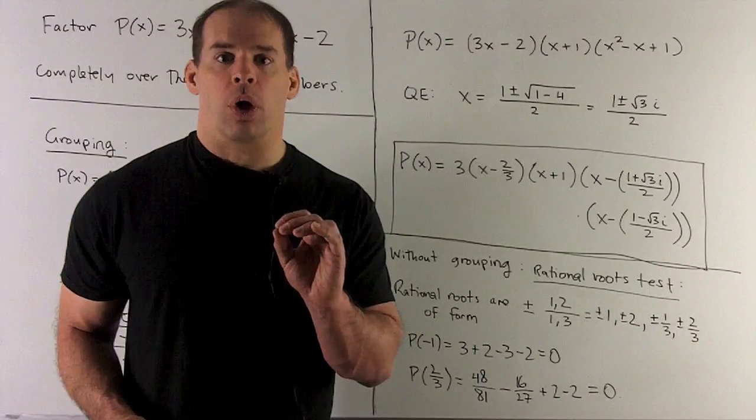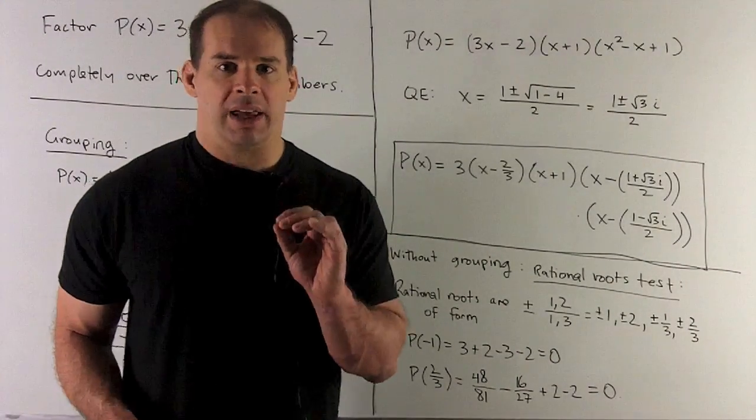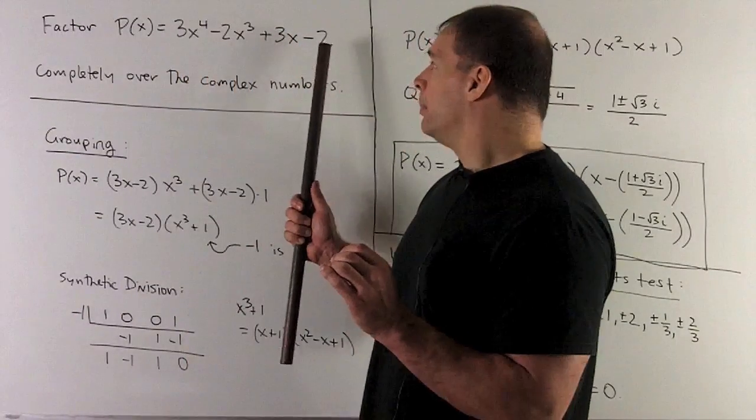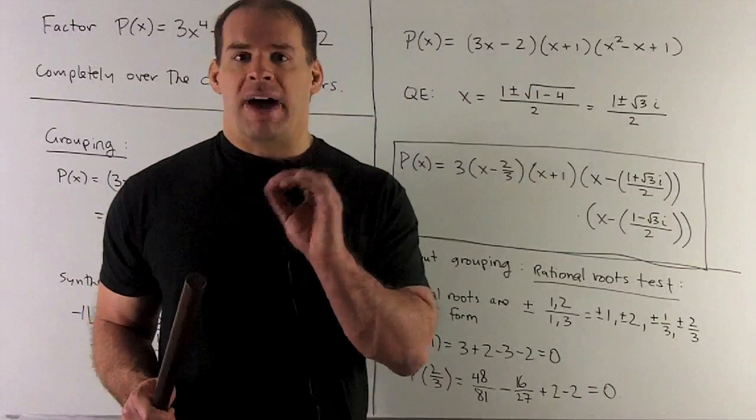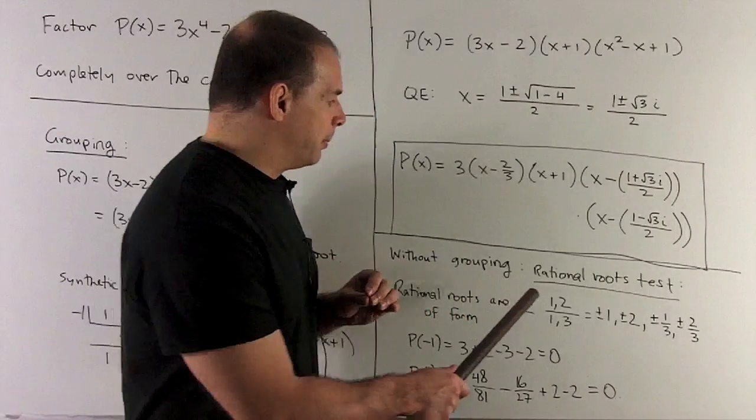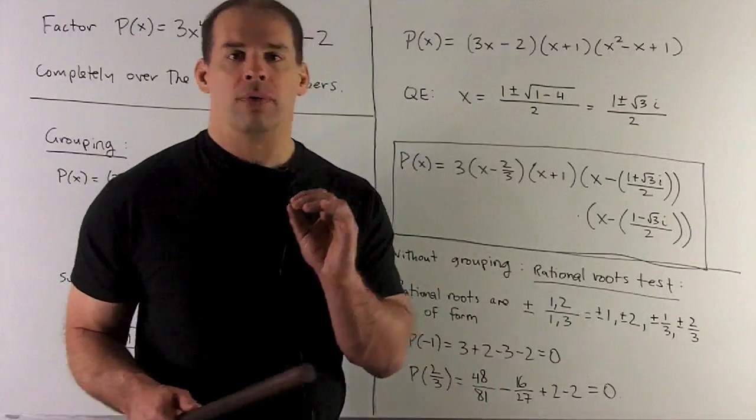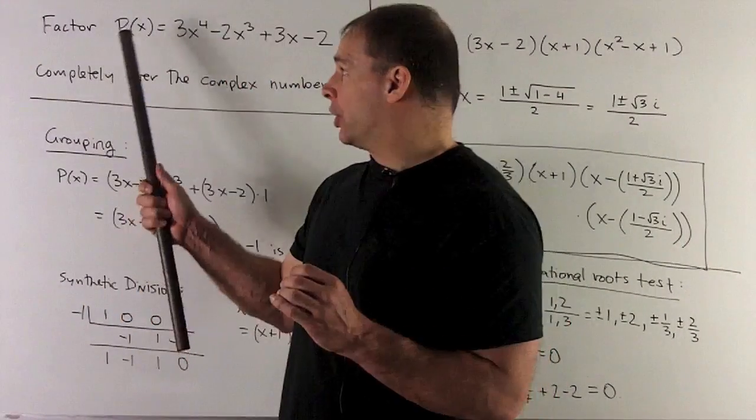So we take the last term, so it's going to be 2. We can have the divisors of that, so it would be 1 or 2, over the divisors of the leading term, which is 3.